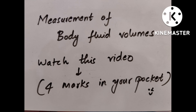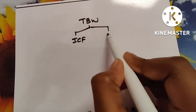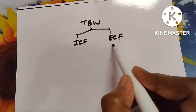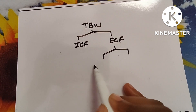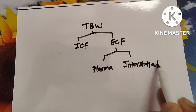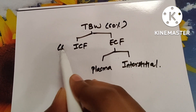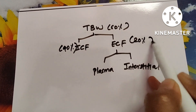Measurement of body fluid volumes is one of the most frequently asked topics from physiology. Watch this entire video and four marks are definitely in your pocket. First, divide total body water into intracellular fluid (ICF) and extracellular fluid (ECF). ECF is further divided into plasma and interstitial fluid.